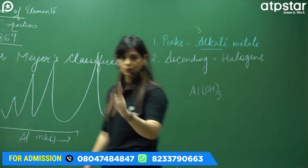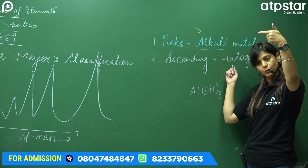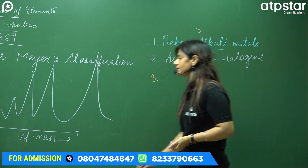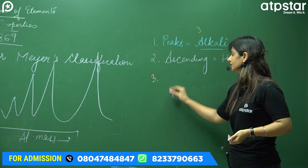And the newest one is Tenesine. So halogens — Fluorine, Chlorine, Bromine, Iodine, Astatine and Tenesine — were on the ascending portion. Then what was the third position? The descending portion. Who were on the descending portion? Alkaline earth metals.